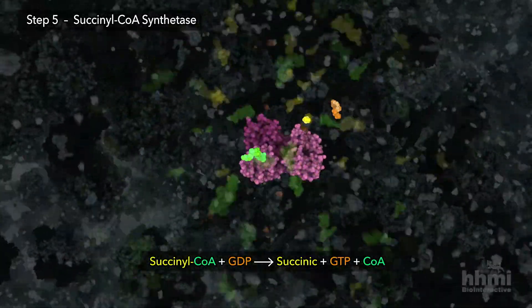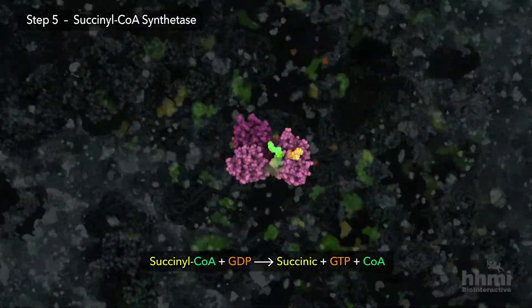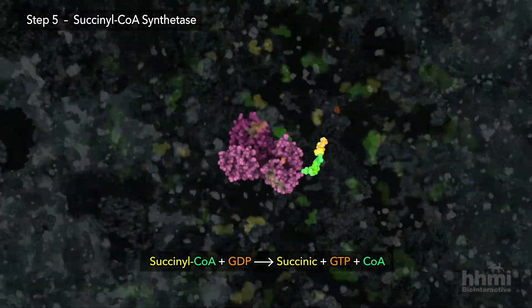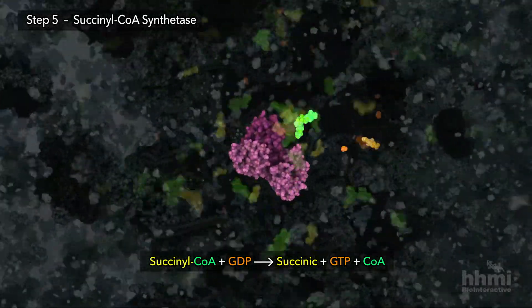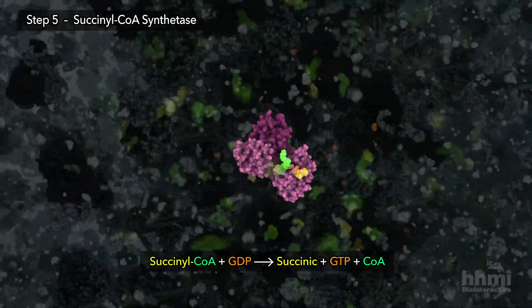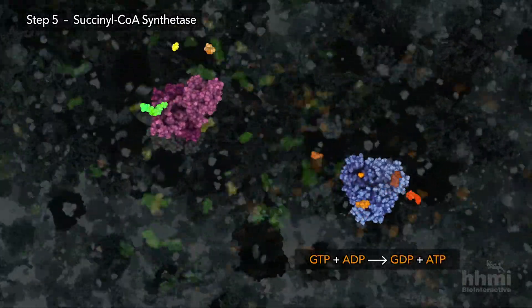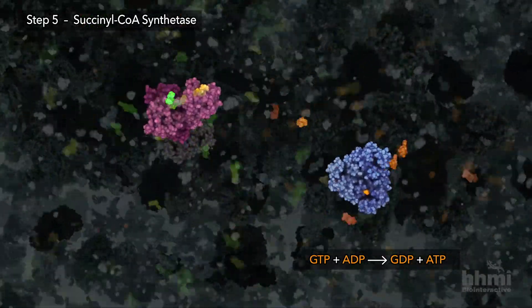Step five provides enough energy to create GTP. GTP is a building block of RNA and an energy source for protein synthesis. In the most direct path to ATP from the citric acid cycle, other enzymes in the matrix can use GTP to make the chemical fuel ATP.